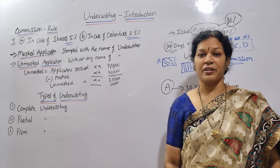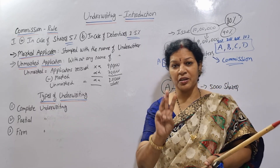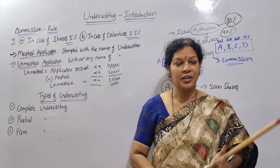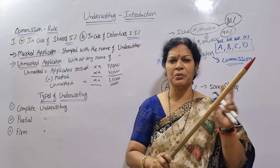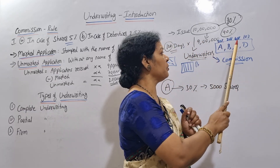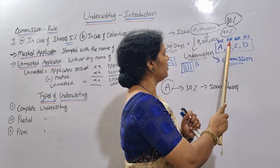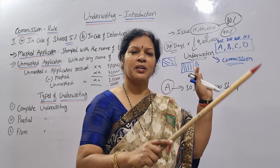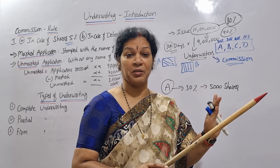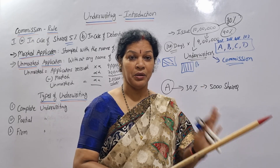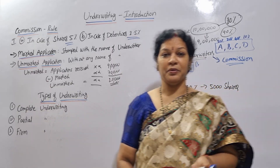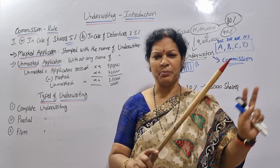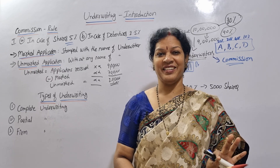There are 3 types of underwriting. The first is complete underwriting. For example, a 10 lakh issue with underwriters holding percentages of 30, 20, 40, and 10 — totaling 100%. This means the entire issue is underwritten. The company has no worries. This is complete underwriting — the underwriters take full responsibility and commitment.